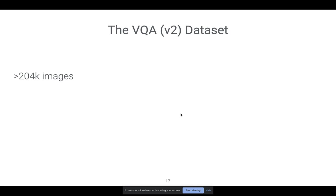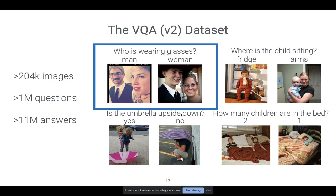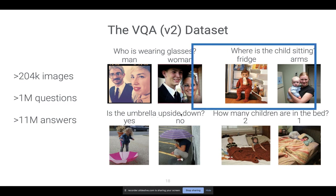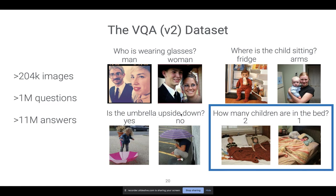When we first started working on this a few years ago, we introduced the VQA dataset, which is fairly large: over 200,000 images, over 1 million questions sourced on Amazon Mechanical Turk, and over 11 million answers. For every question, there are two images that look similar to each other but where the answer to that question is different, so the model really has to look at and understand subtleties of the image. For example: 'who is wearing glasses?' — in one image the man is, in the other the woman is. 'Where is the child sitting?' — in one case the fridge, in another case arms. 'Is the umbrella upside down?' — yes in one, no in the other. 'How many children are in the bed?' — two in one case, one in the other.